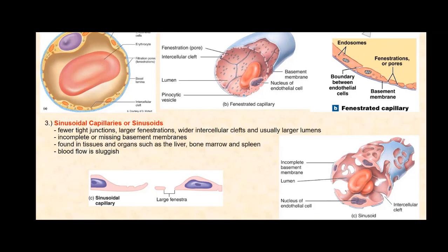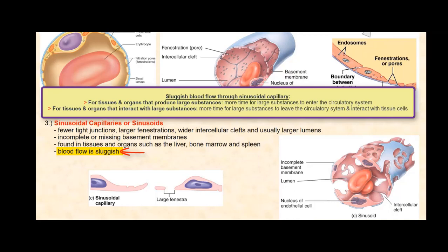The newly produced red blood cells can enter the circulatory system through the sinusoidal capillary. Over time, these red blood cells become old and damaged and need to be broken down and recycled. One organ that does this is the spleen, which also contains sinusoids, so these old damaged red blood cells can leave the circulatory system through the sinusoidal capillary to be recycled by the tissue cells of the spleen. Blood flow through a sinusoidal capillary tends to be sluggish, giving more time for large substances to either enter or leave the circulatory system.